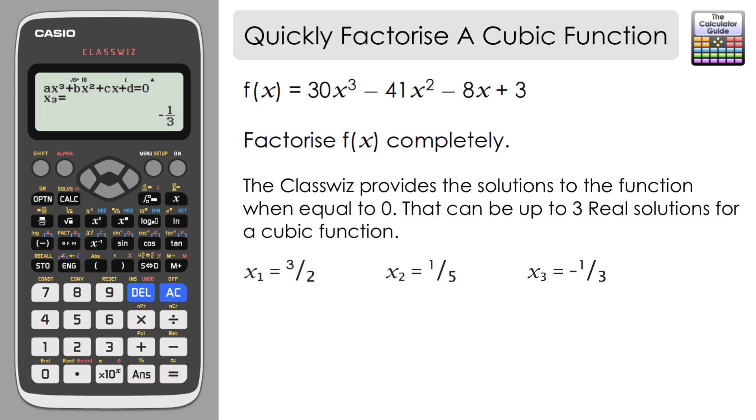If these are our three solutions to the cubic function, we can rearrange so that everything is on the left-hand side and equals zero on the right-hand side. Then we will have our factors of this particular cubic function.